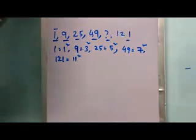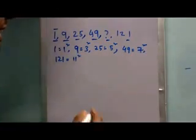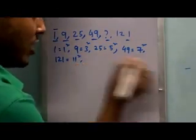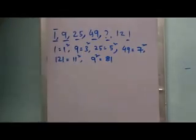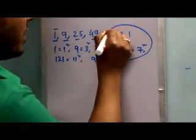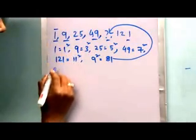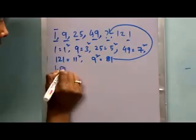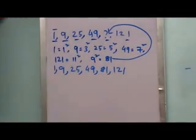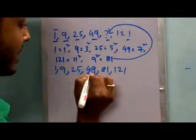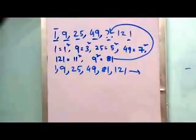So what is 9 square? It's 81. So if we put 81 here, then what we actually get: we get 1, 9, 25, 49, 81, 121. So it's 1 square, 3 square, 5 square, 7 square, 9 square, and 11 square. Now the series is completed.